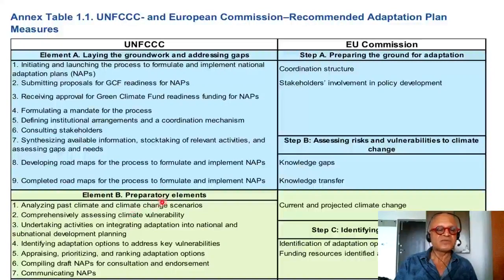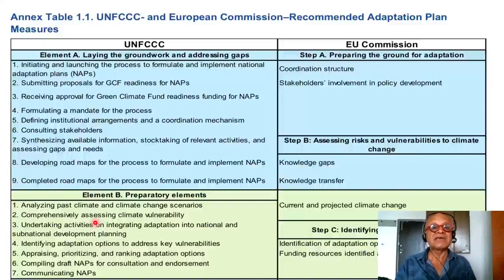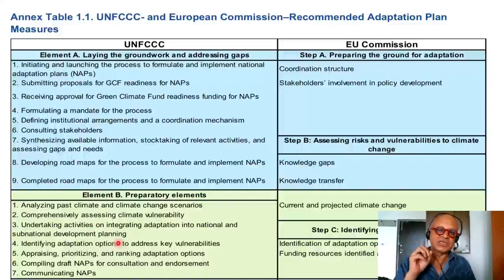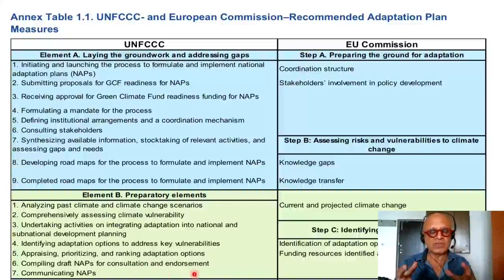In the preparatory elements, UNFCCC recommends analyzing past climate and future climate change scenarios — taking historical data and future scenarios to make judgments and priorities. This includes comprehensively assessing climate vulnerability, which requires a lot of data. Data needs have to be immediately assessed and closed as soon as possible to have reliable vulnerability at the spatial resolution necessary to take adaptation actions. It also covers integrating adaptation into national and subnational development planning, identifying adaptation options to address key vulnerabilities, appraising, prioritizing and ranking adaptation options, compiling draft NAPs for consultation and endorsement, and communicating national adaptation plans.